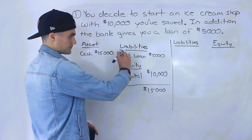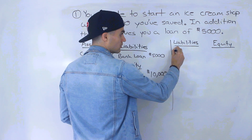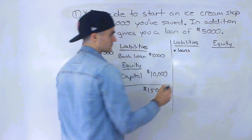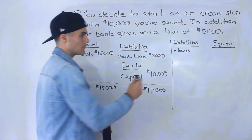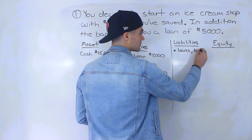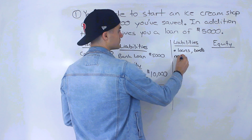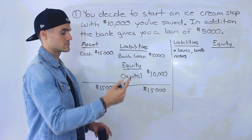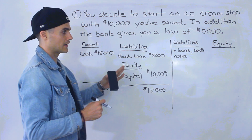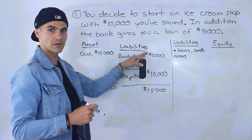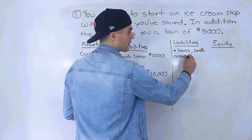Starting with liabilities, notice we have this bank loan here for $5,000. These, in general, are just basically loans. As the course goes on, you're going to see different names for these loans come up. A popular one will be bonds — it's just a type of loan. Sometimes you'll see notes, like note payables — that's just a type of loan. And these liabilities are also going to be split up into short-term liabilities, like accounts payable, and then long-term debt.